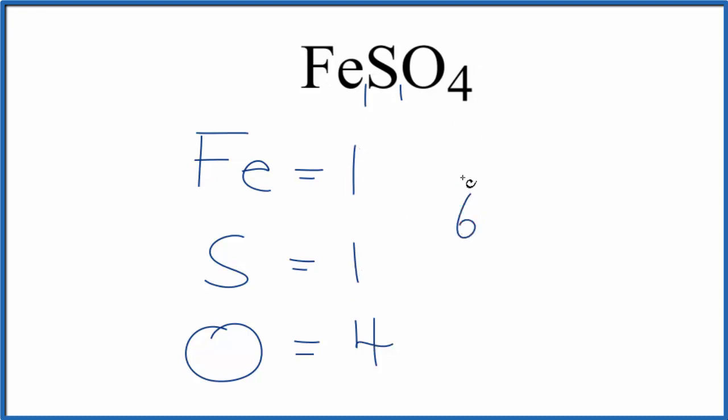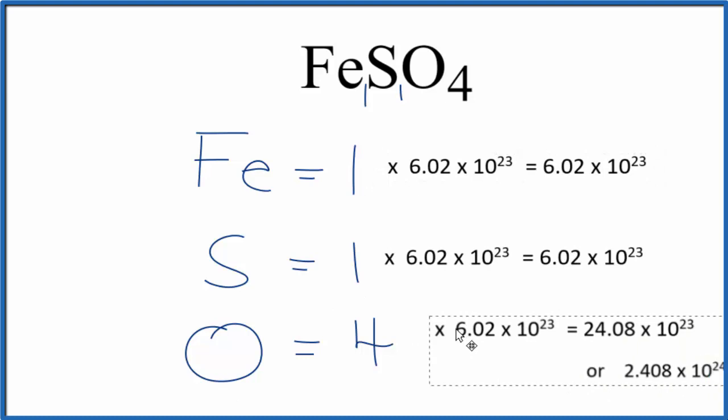Sometimes you're asked to figure out the number of atoms in one mole of this iron(II) sulfate. To do that we're just going to multiply the number of atoms. Say we have one here times Avogadro's number. Do the same thing for sulfur, and then for oxygen here we would multiply four times Avogadro's number.